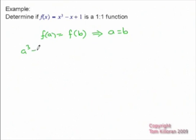So let's see, f of a would be a cubed minus a plus one, f of b would be b cubed minus b plus one, and we start trying to solve for a.